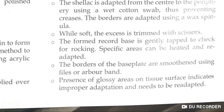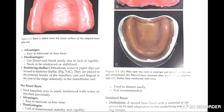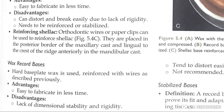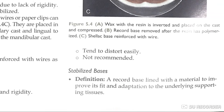The formed record base is gently tapped, heating specific areas and re-adapting. Borders are smoothed with files or arbor bands. Glossy areas on the tissue surface are improved by re-adaptation. The advantage of shellac is that it is easy to fabricate. The disadvantage is that it can distort and break due to lack of rigidity, so it is necessary to reinforce and stabilize it. Orthodontic wire or paper clips are used to reinforce the shellac, placed on the posterior border. The wax record base uses hard base plate wax reinforced with wires; its disadvantage is lack of dimensional stability and rigidity — it tends to distort easily and is therefore not recommended.